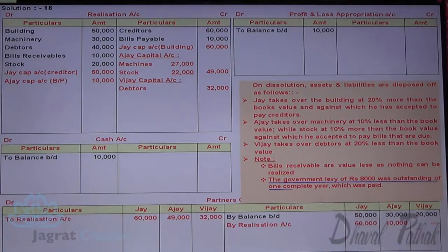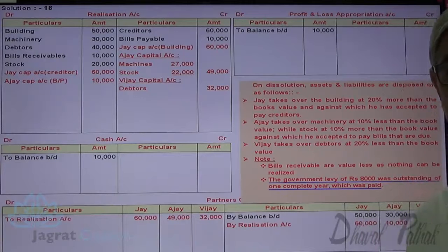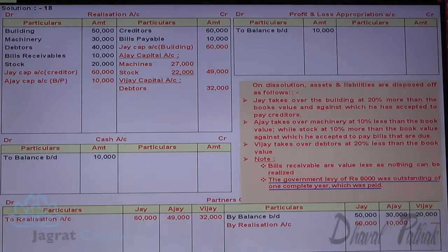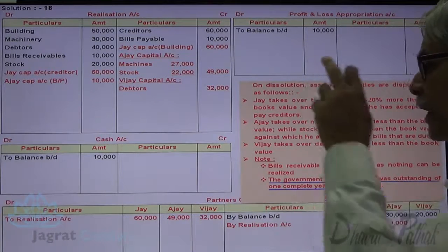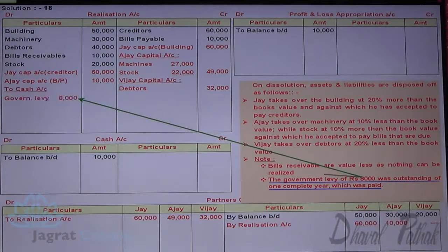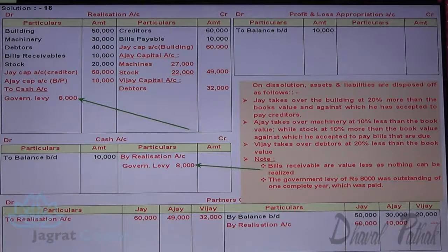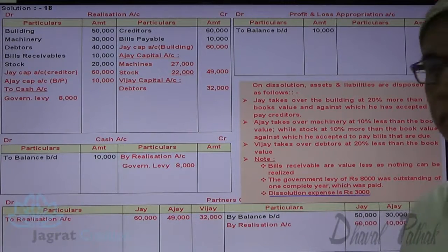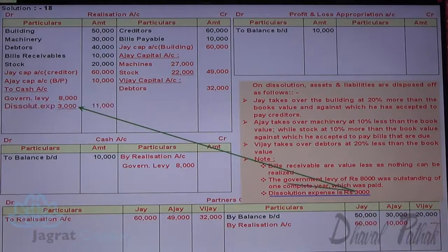Unrecorded government liability of 8,000 is paid: realization account debit 8,000 to cash account credit 8,000. Dissolution expenses of 3,000 are paid: realization account debit to cash account credit.